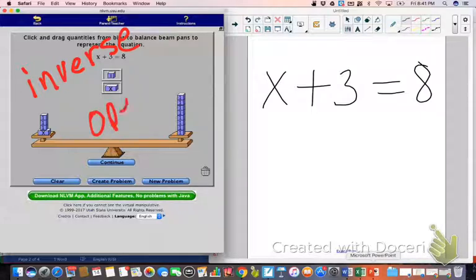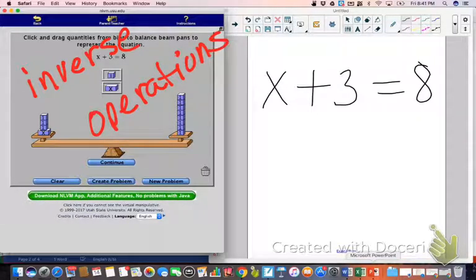And we know that the word operations actually refers to a number of different things. The ones we're the most familiar with are like addition, subtraction, multiplication, and division. These are the only ones we're going to worry about right now. So when we say inverse operations, we mean the operations that are the opposite of each other. So of course, addition and subtraction are inverses.